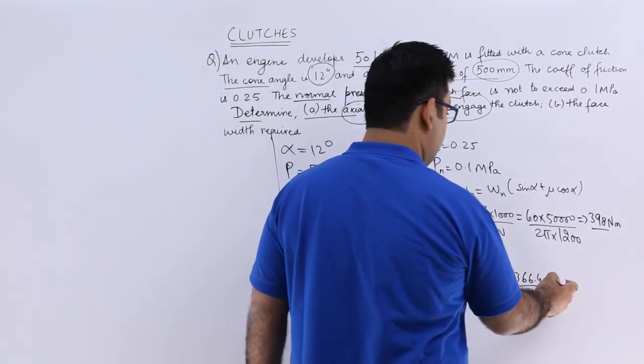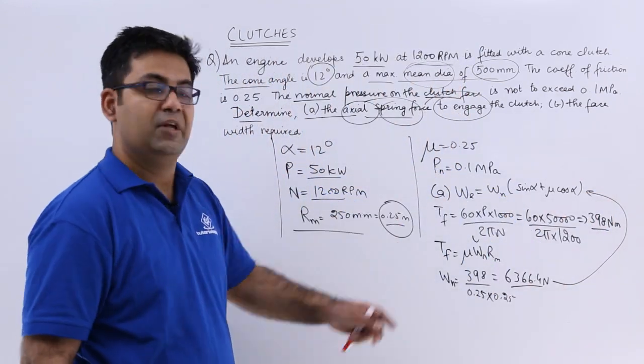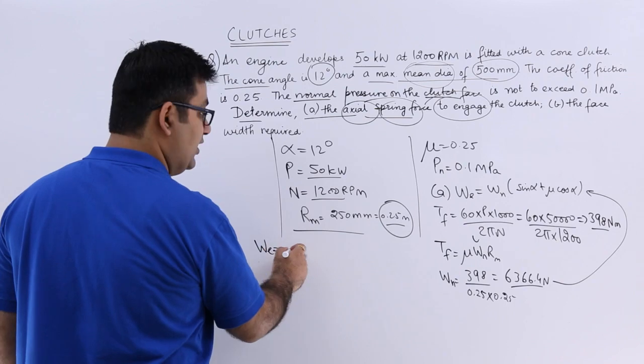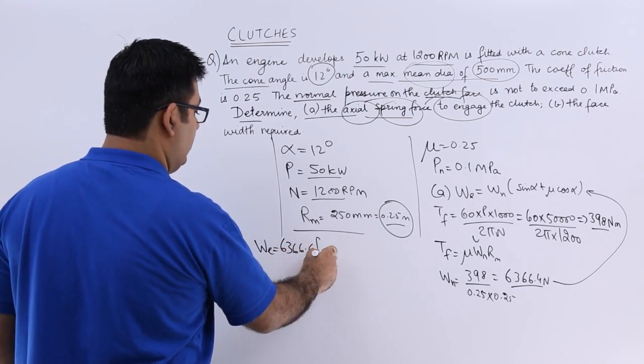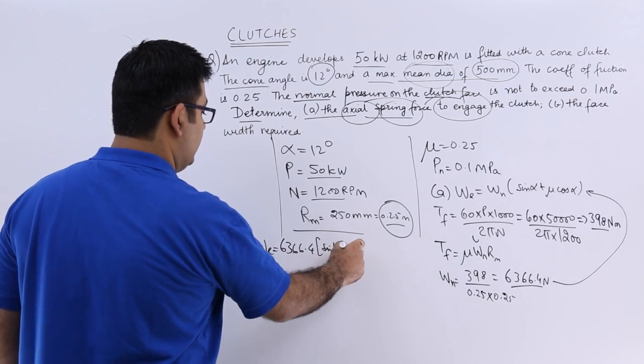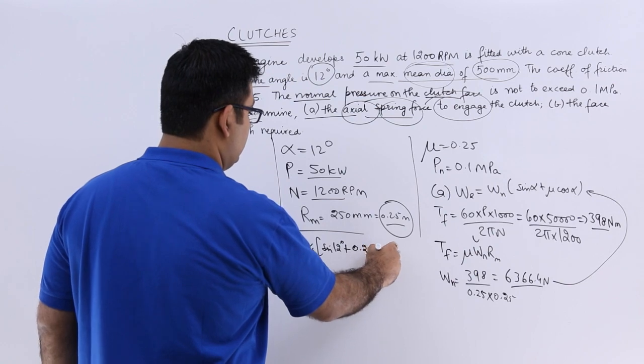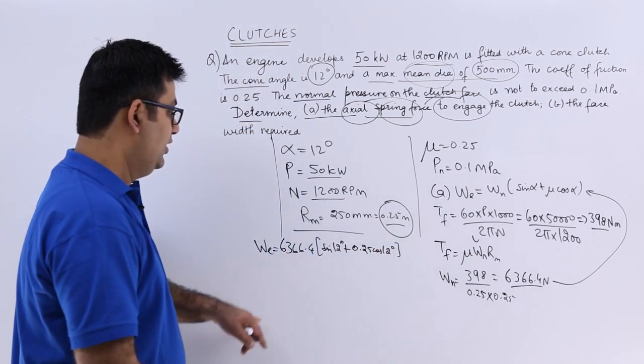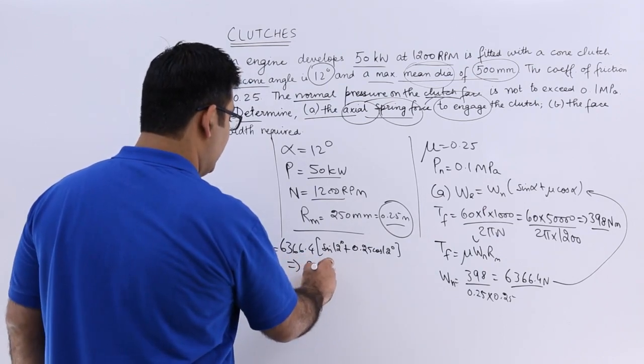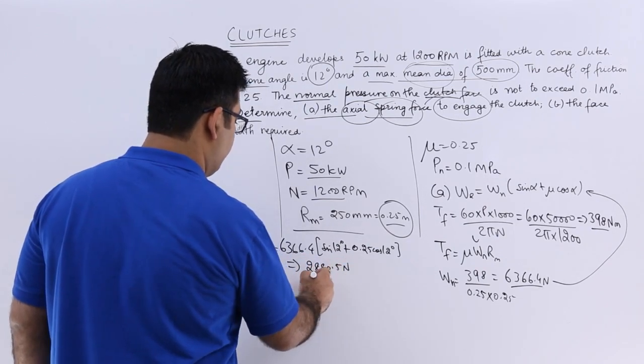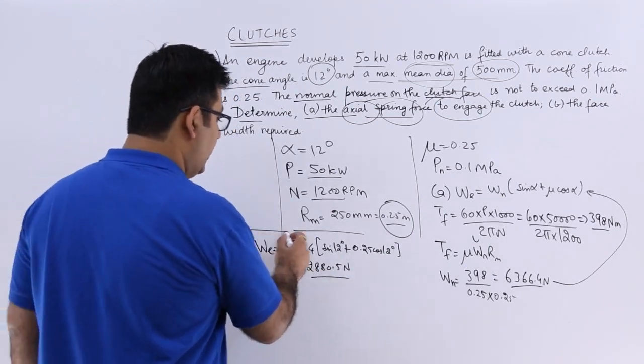So now we will put this value into this expression to get the value for WE. So WE is 6366.4 times sin 12 degrees plus 0.25 times cos 12 degrees. This would give you the engagement force at 2880.5 N. So this is the engagement force.